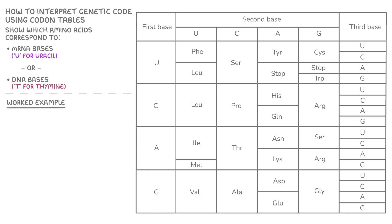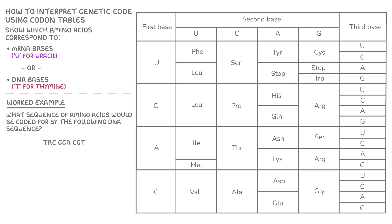So let's try a worked example. What sequence of amino acids would be coded for by the following DNA sequence: TAC, GGA, CGT? If we had DNA bases in the codon table, we could just look at the table straight away and simply read off our answer. But as it's got mRNA bases instead, we first need to figure out what mRNA sequence would be produced by our DNA code. This sequence of DNA bases would result in an mRNA strand being produced with the sequence AUG, CCU, GCA.